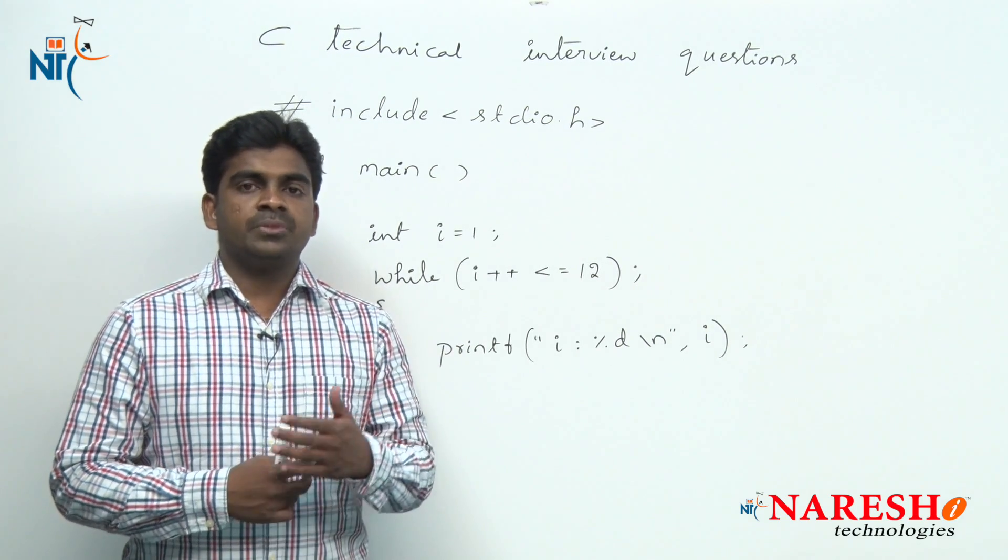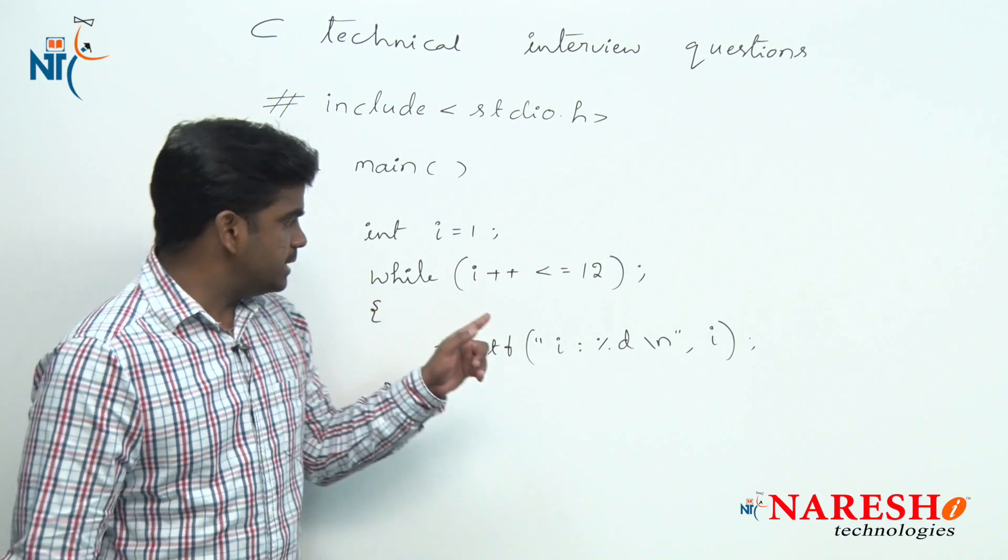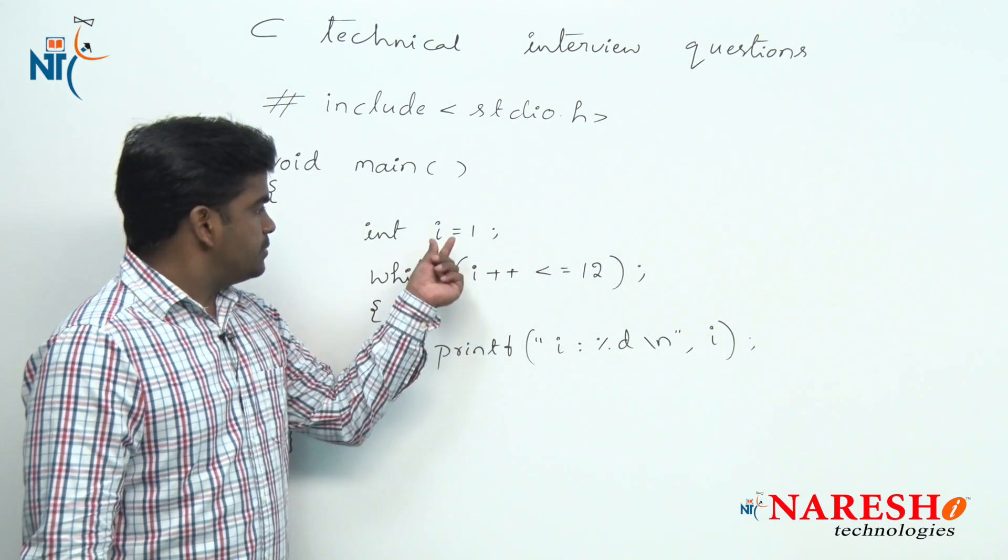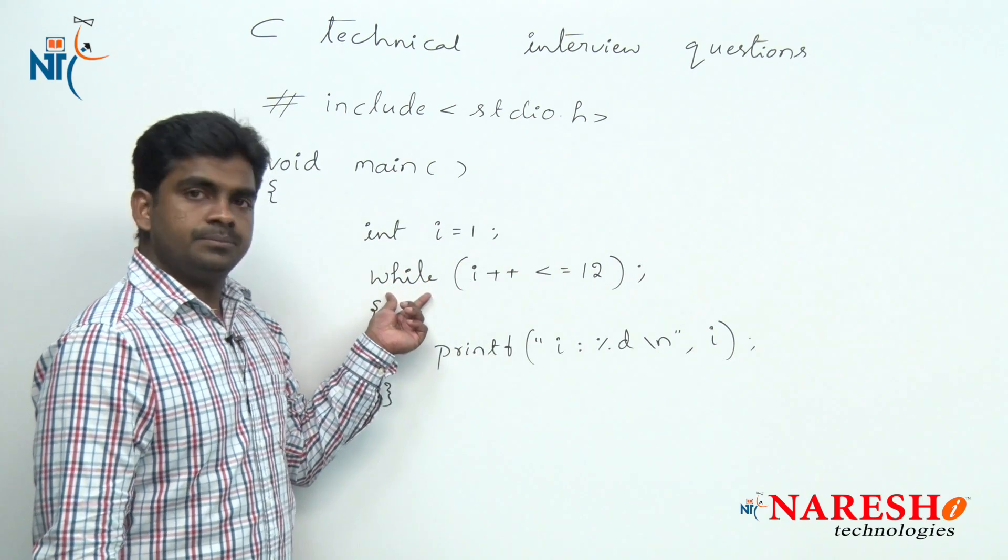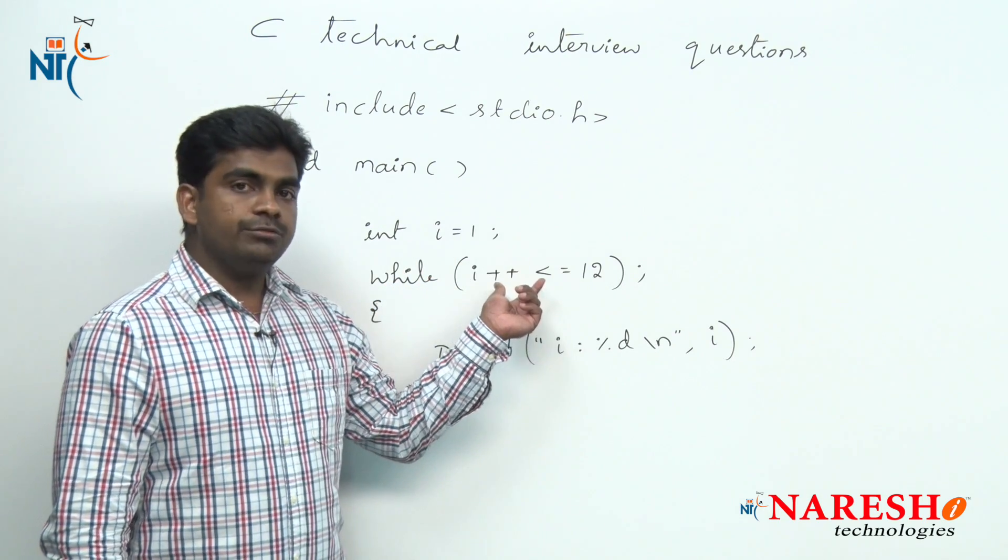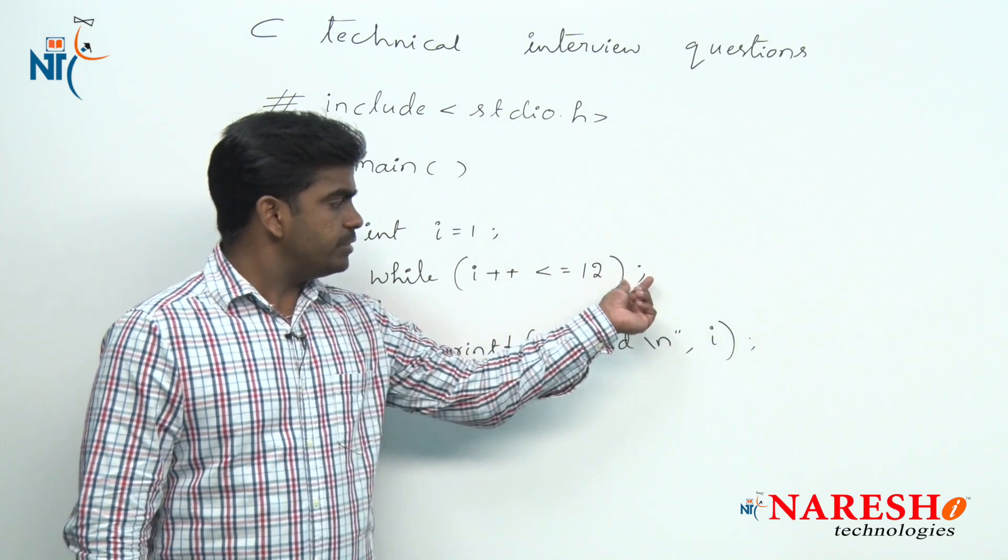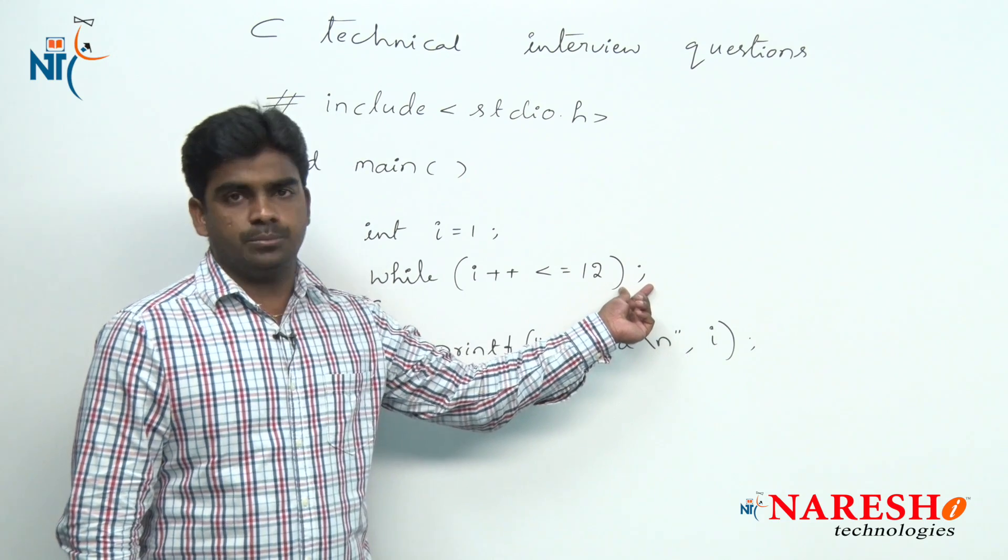That is the loop control statement. Here in this code we are initializing i value with 1, and here in the while we are writing condition, and followed by the condition we are writing semicolon. This is very very important.